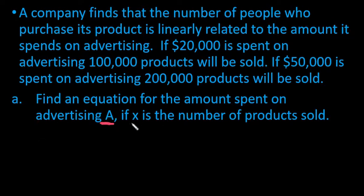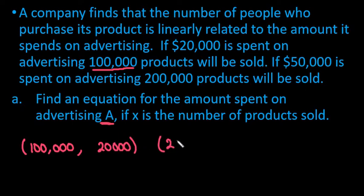So our ordered pairs, if we look at x being the number of products sold, when we sell 100,000 that means that we spent 20,000 on advertising. And when we sell 200,000 products we spent 50,000 on advertising.